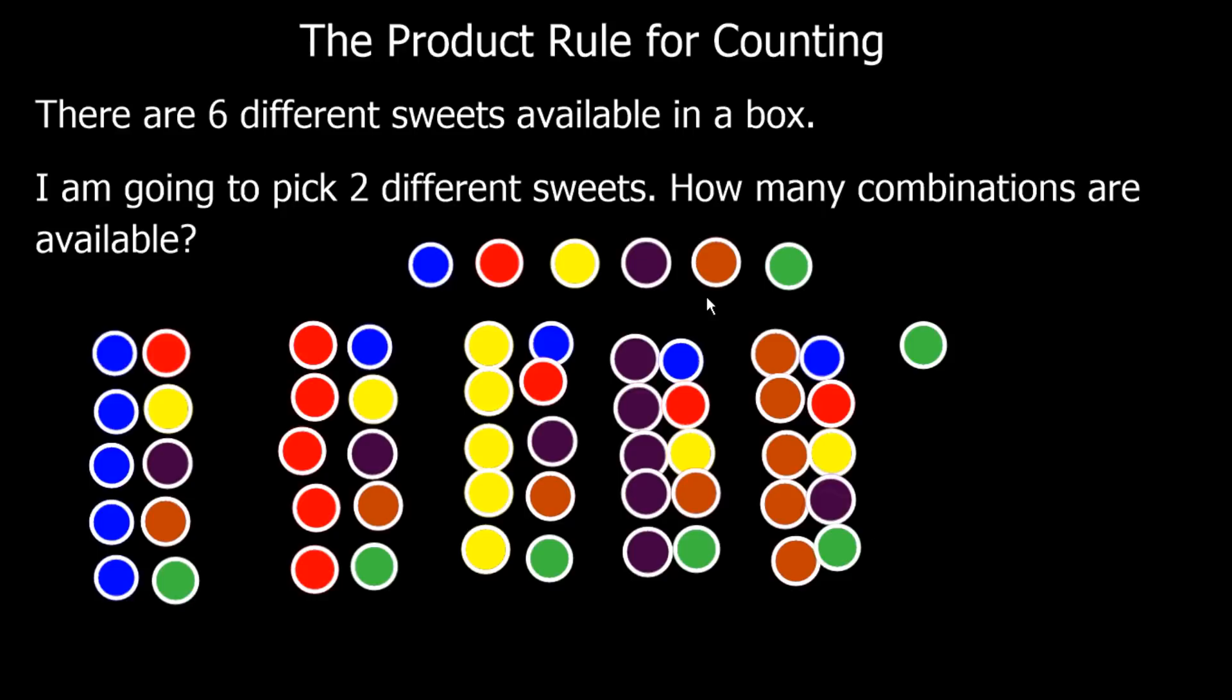I could go purple first and go purple blue, purple red, purple yellow, purple brown, and purple green. And if I went for a brown first I could go brown blue, brown red, brown yellow, brown purple, brown green. And green first, go green blue, green red, green yellow, green purple, and finally green brown.